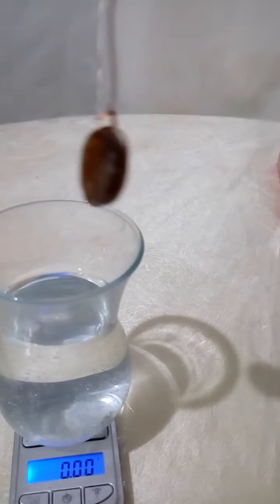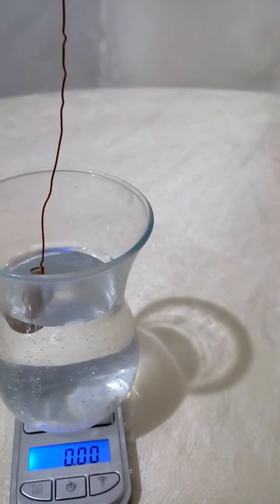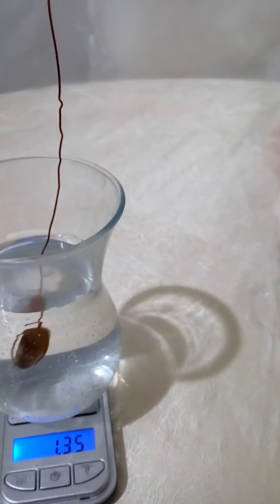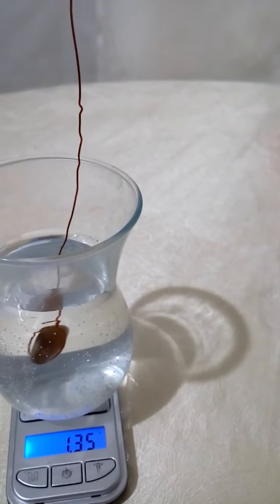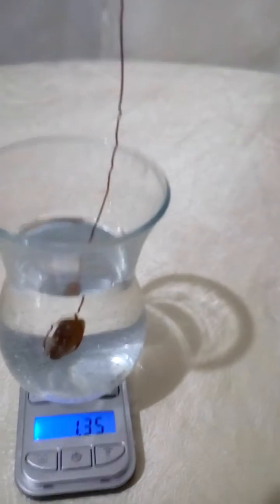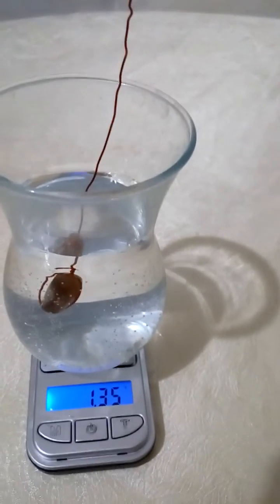Then we hold the stone by the wire and sink it in the cup of water. We try not to touch the side of the container or reach the bottom of the container. Then we read the result: it's 1.36.